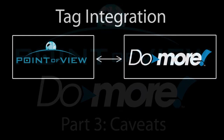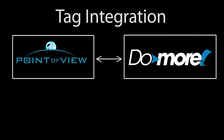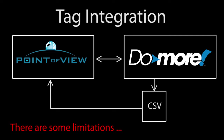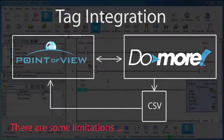In the previous video we saw that tag integration is easy. You just export a CSV file from the Do More Designer project and then tell Point of View where to find that file, which you would normally put in your Point of View project folder. In this video we'll take a look at a couple of things you need to be aware of before using tag integration with a Do More controller, and we'll also cover a few general items that apply to all controllers.